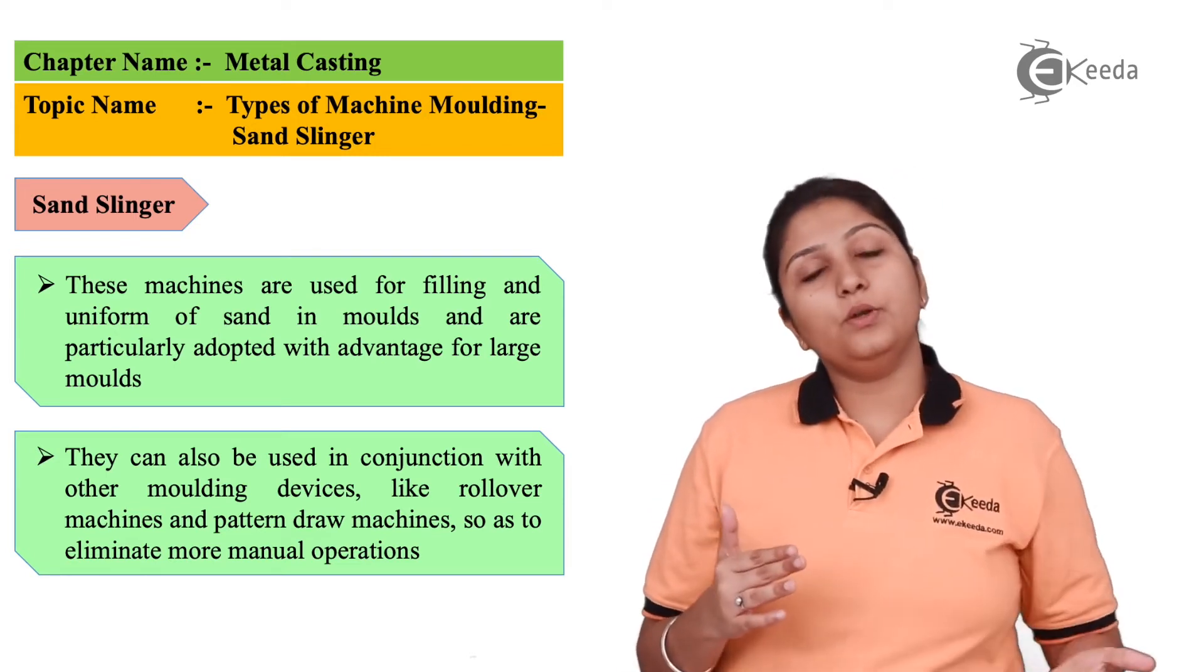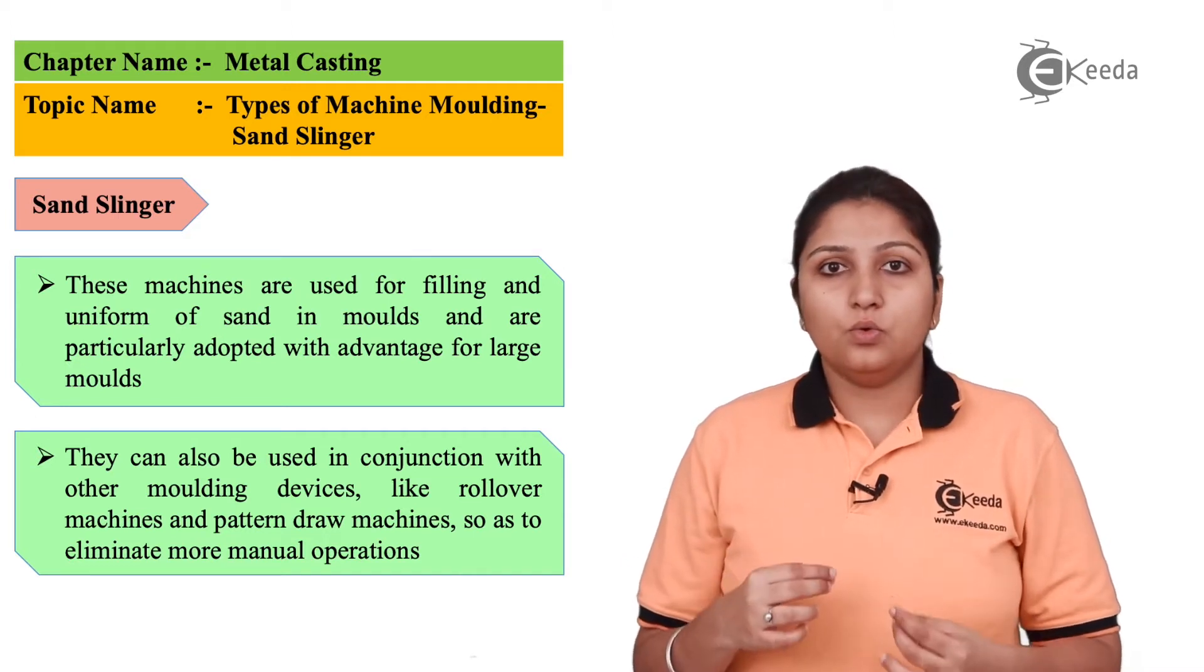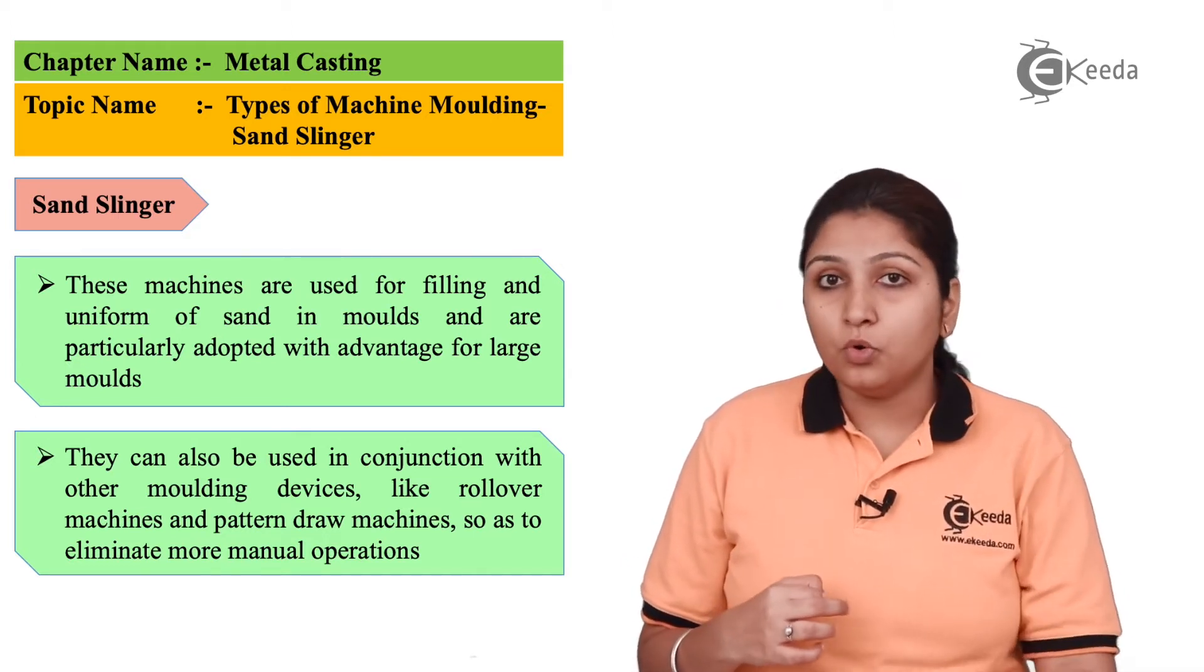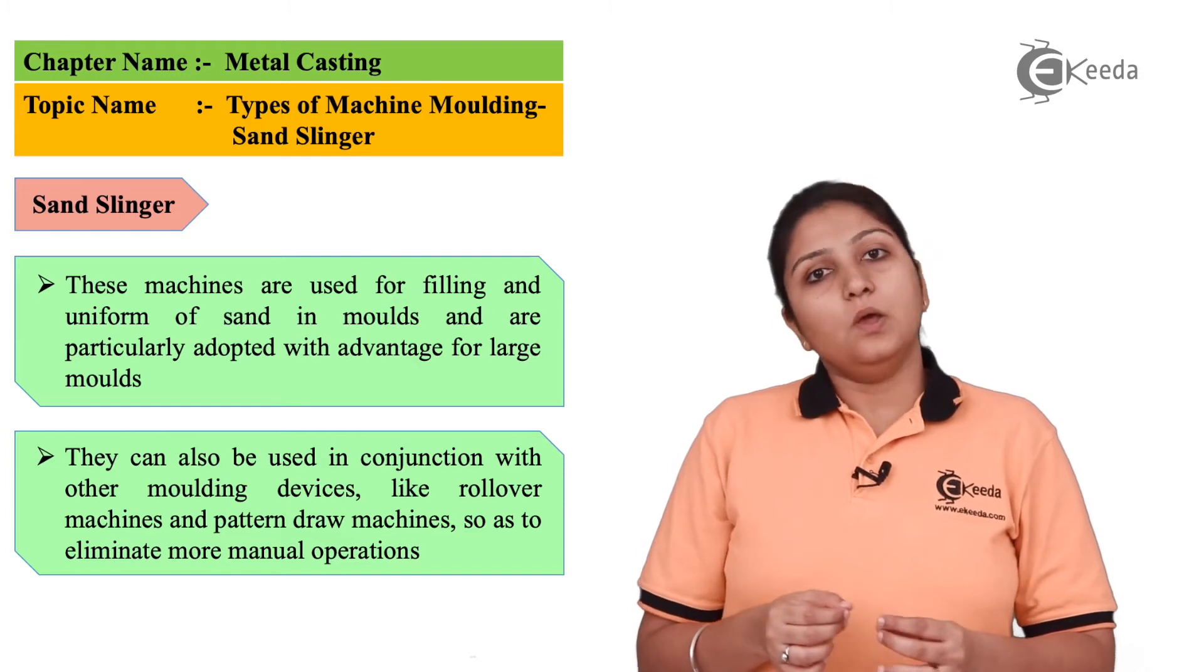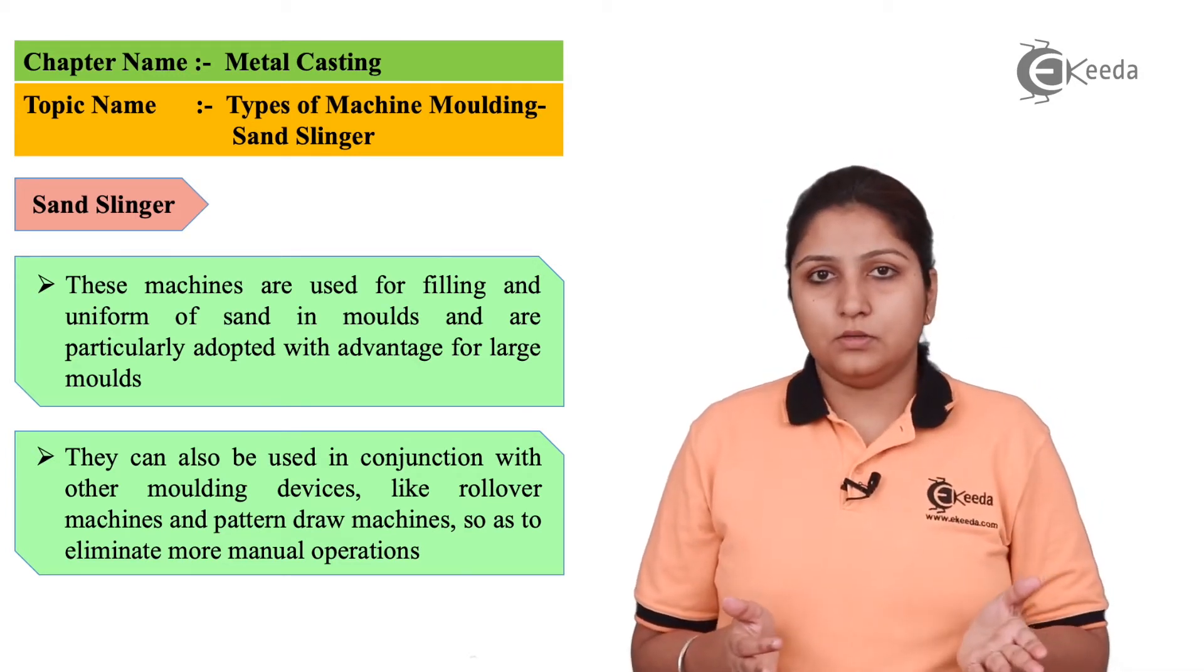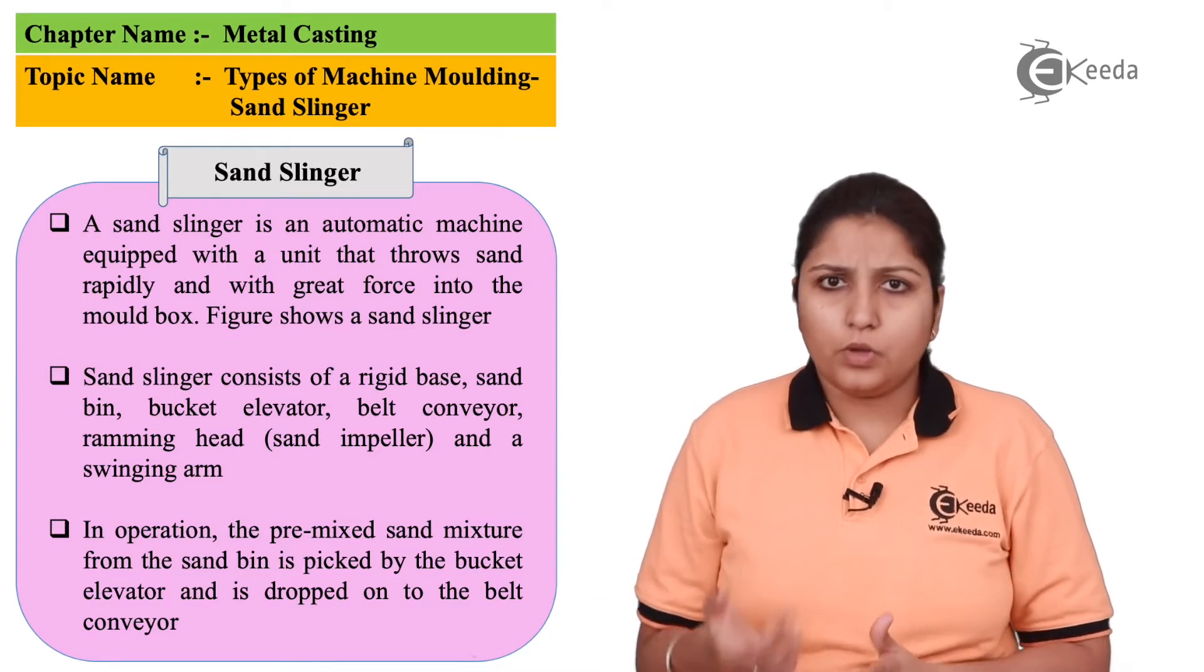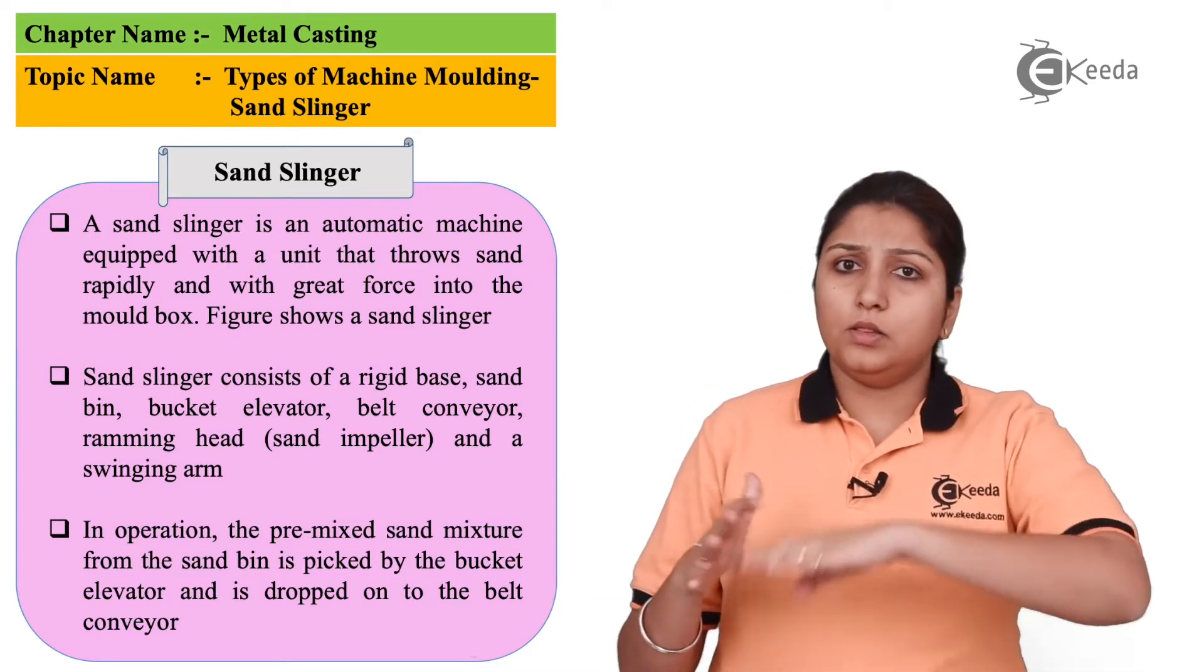The sand which is in your mold, which is the final sand, is very fine and it reaches through a lot of processes. Other devices which are used in a sand slinger are belt conveyor, bucket, and all the other things.